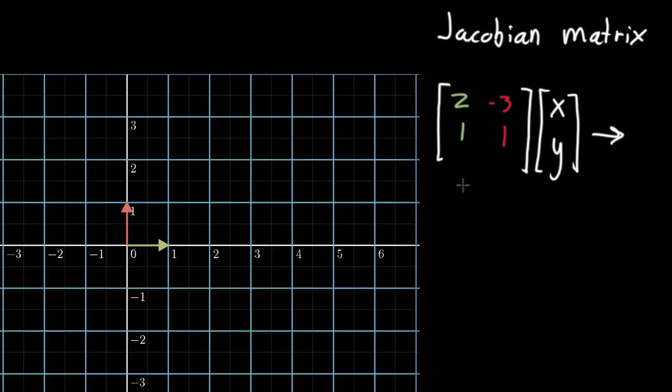And this is going to give us a new two-dimensional vector. This is going to bring us to, let's see, in this case, it'll be, I'll write 2, 1, negative 3, 1, where what it gives us is 2x plus negative 3 times y, and then 1x plus 1 times y.